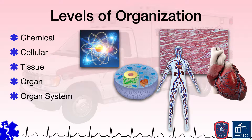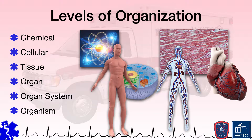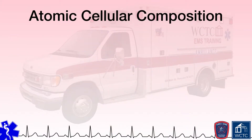Lastly, when all organ systems are pulled together to form a living being, an organism is said to exist. This is the last and highest level of organization for the human body, as the organism is the whole of the human body built upon organ systems, their organs, the tissues that comprise those organs, the cells of those tissues, and the individual chemical atoms and molecules necessary to build cells and life. Let's now take a closer look at the building blocks of those organs down to the atomic level.